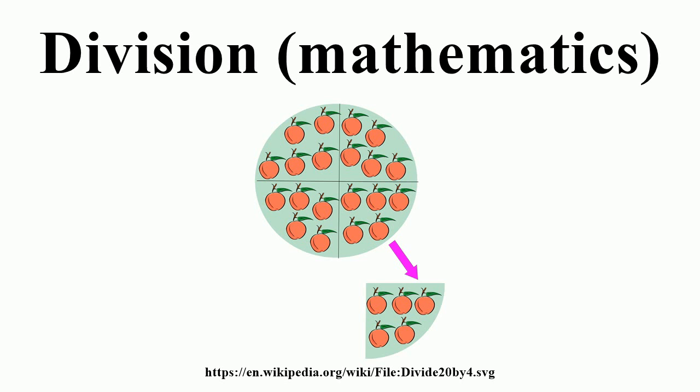A person can calculate division with a slide rule by aligning the divisor on the C scale with the dividend on the D scale. The quotient can be found on the D scale where it is aligned with the left index on the C scale.